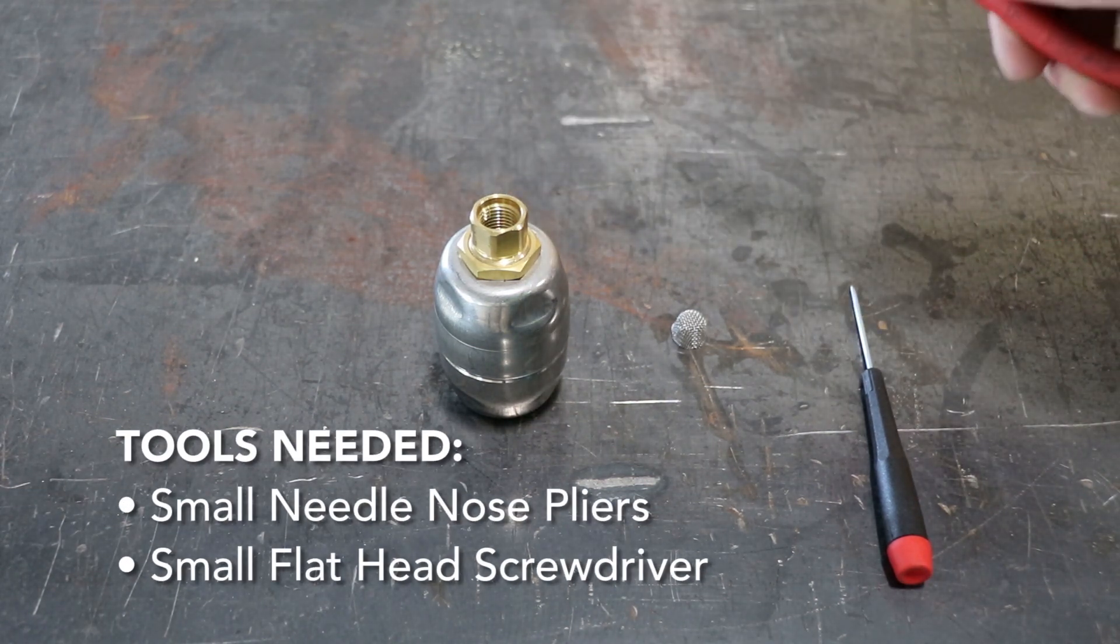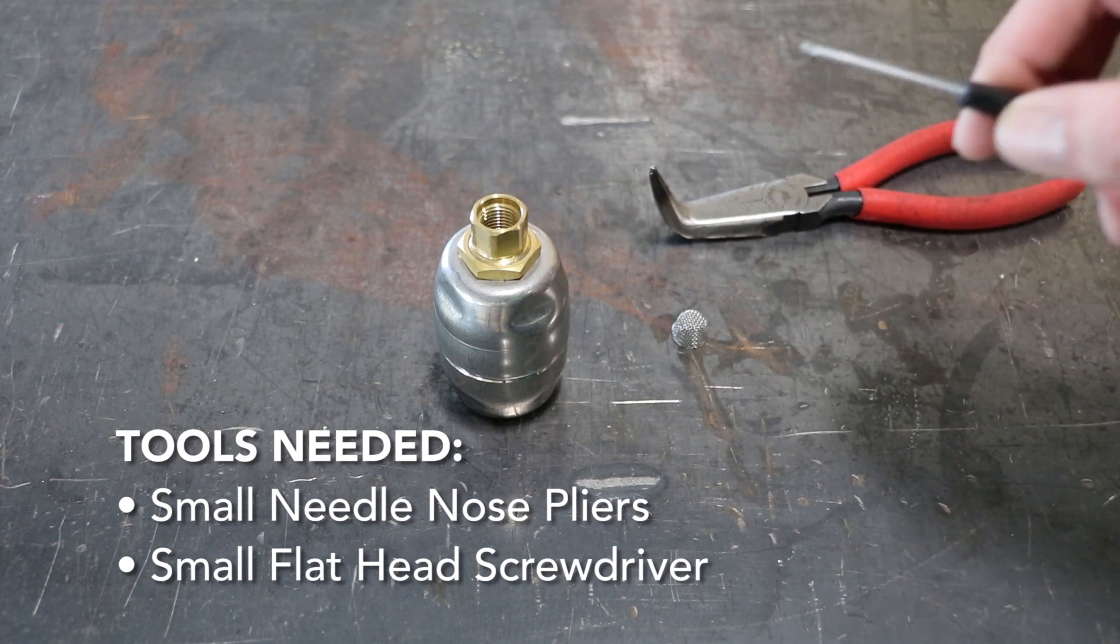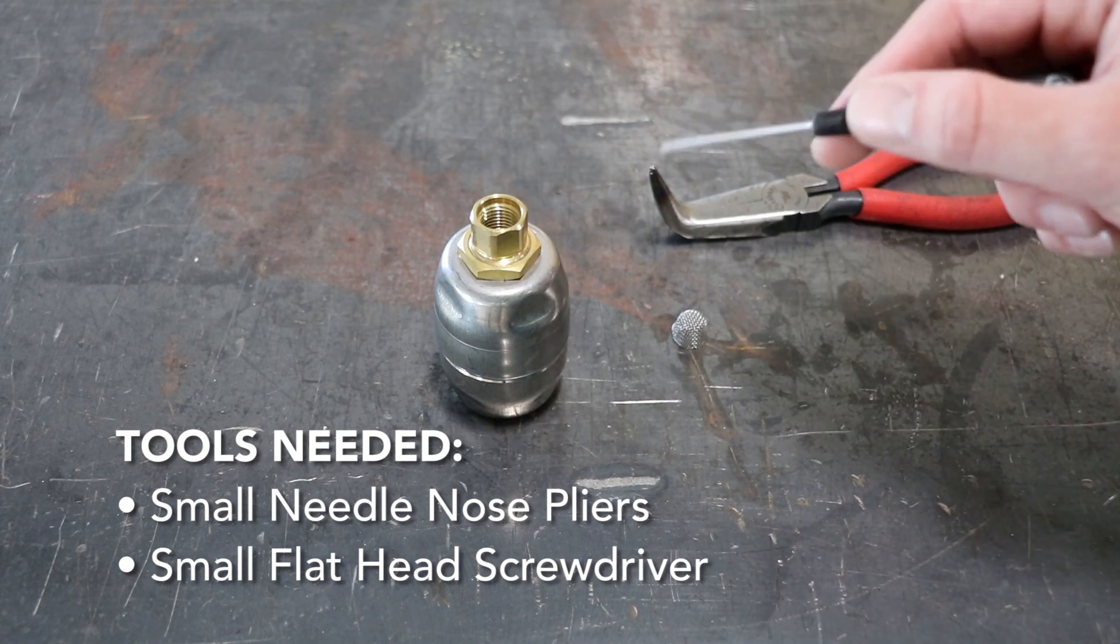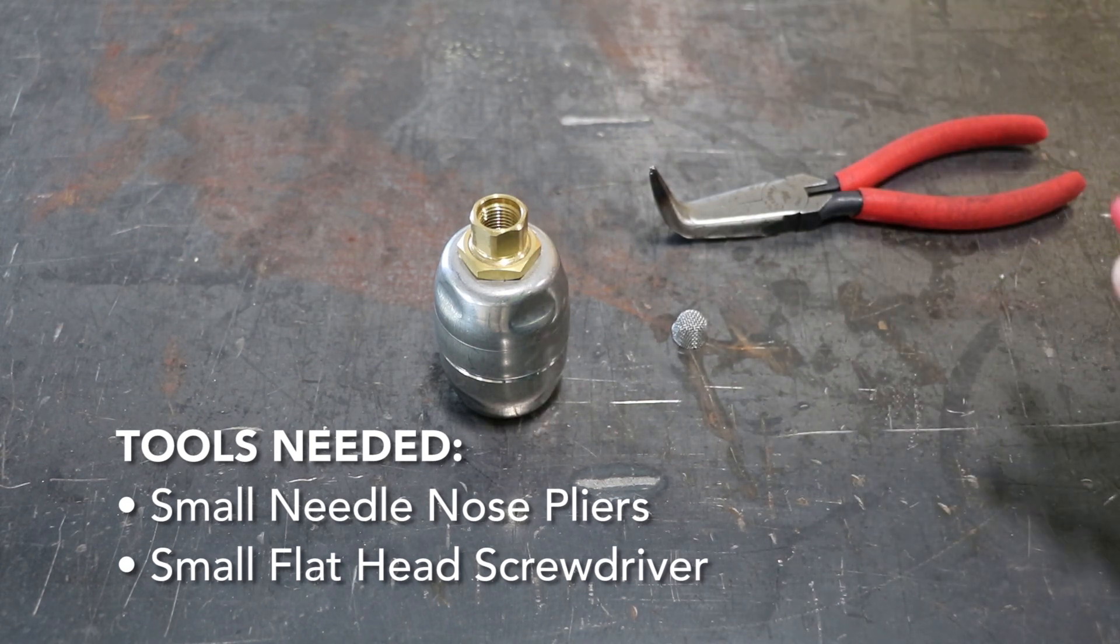You'll need a small needle nose pliers as well as a small flat-headed screwdriver to pry the screen away, just to make it a little easier to pull out.